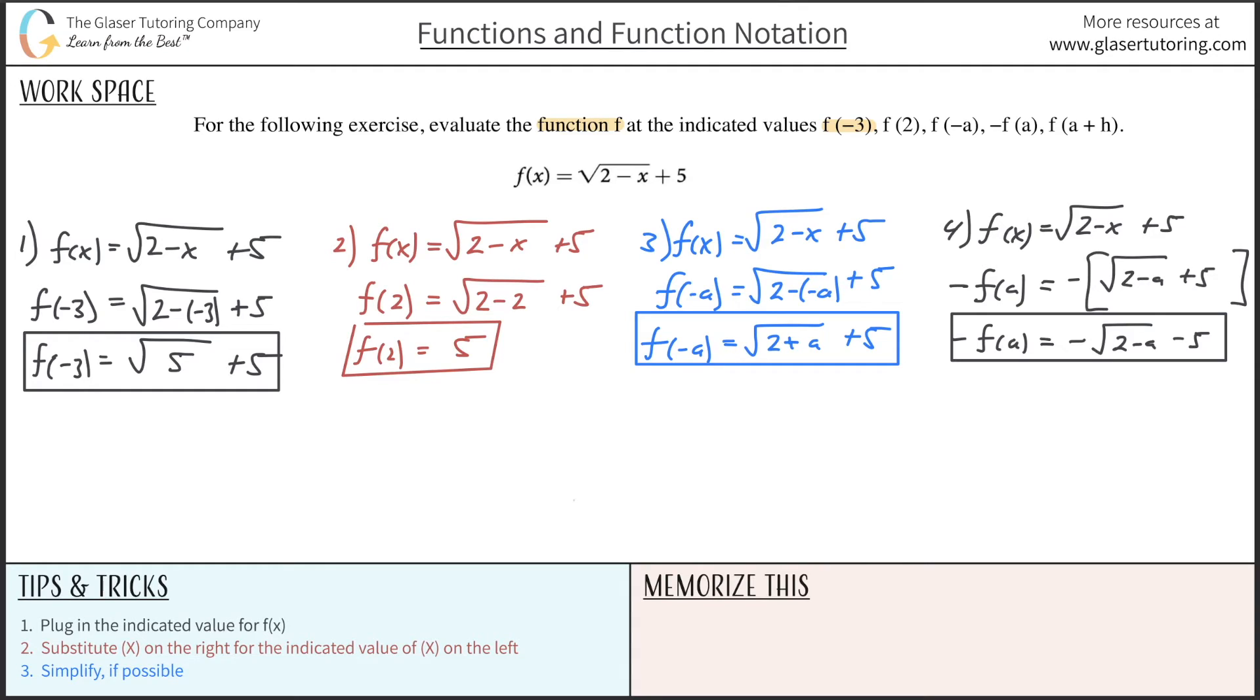Last but not least, let's do number 5. So again, rewrite the function f of x equals radical 2 minus x plus 5. Now they want us to evaluate it at f of a plus h. No worries. We follow the process. Trust the process.